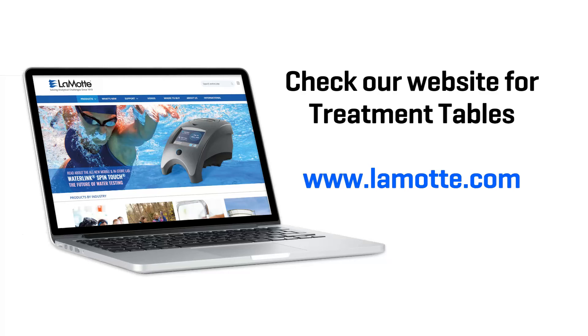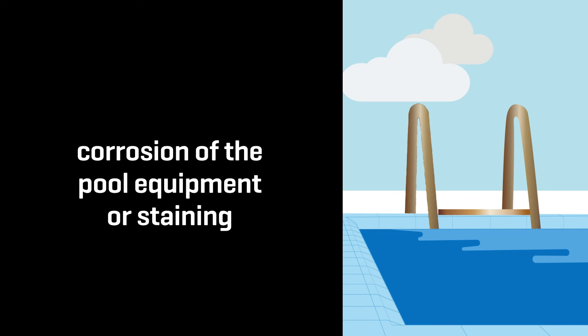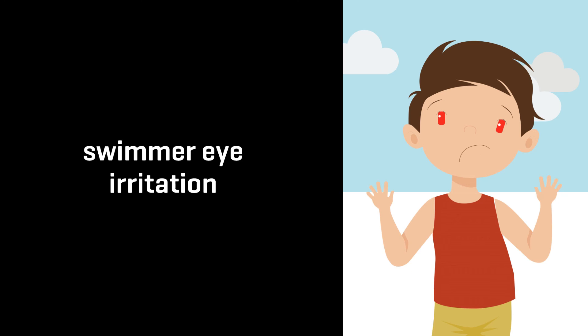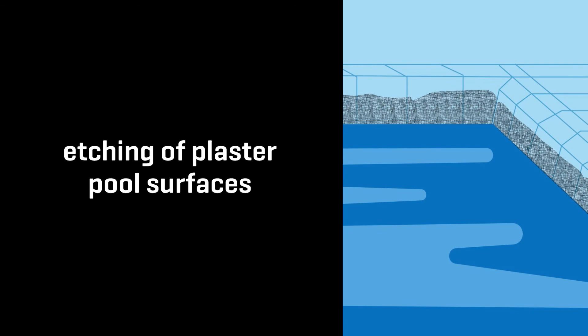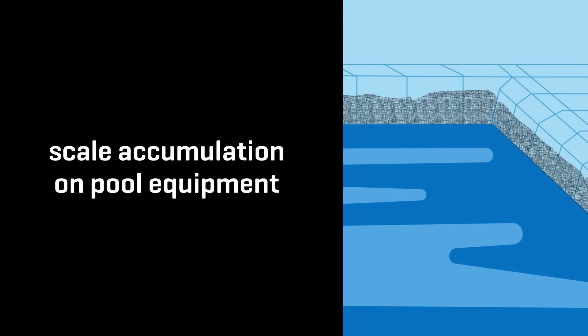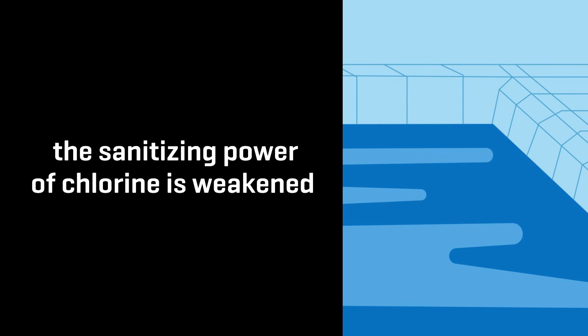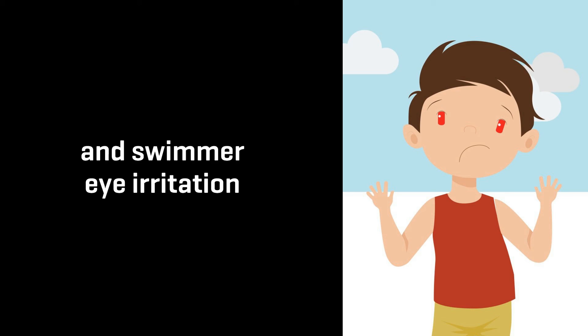Check our website for treatment tables at www.lamott.com. If pH is too low (acidic), it can cause corrosion of the pool equipment or staining, swimmer eye irritation, etching of plastic pool surfaces, or rapid chlorine depletion. If pH is too high (basic), it can cause scale accumulation on pool equipment, cloudy turbid water, weakened sanitizing power of chlorine, and swimmer eye irritation.